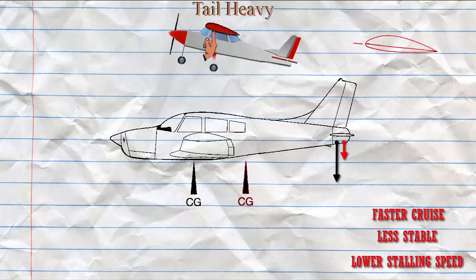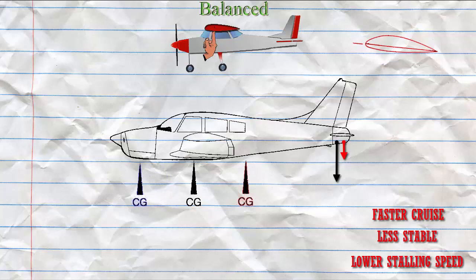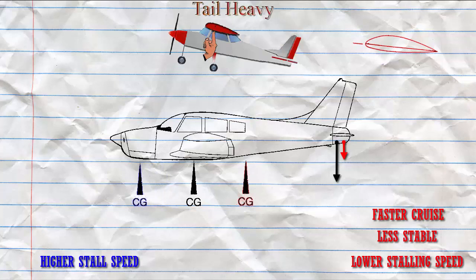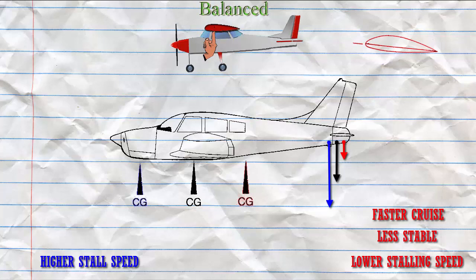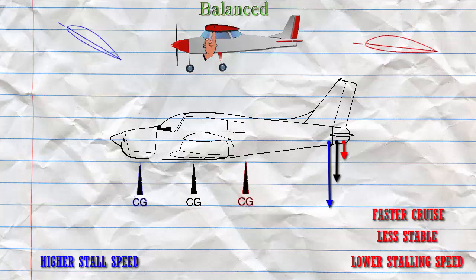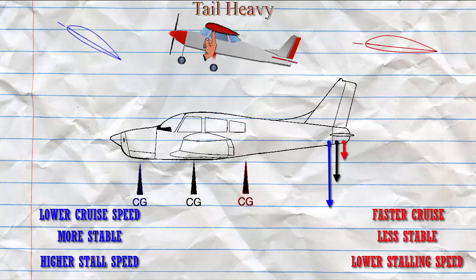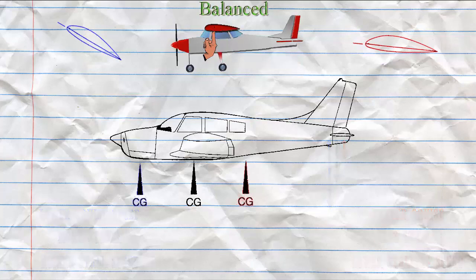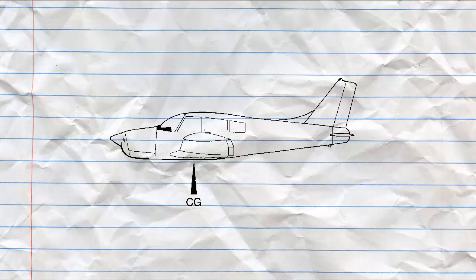A forward CG will result in a higher stall speed. This is due to the fact that the nose up trim that we use requires a greater down force on the tail. This also means a higher angle of attack and more drag. This is a more stable condition and will have a lower cruise speed. A higher angle of attack and more drag will produce a lower cruise speed. We may not be able to flare enough whenever we come in for our approach to landing if the CG is too far forward.